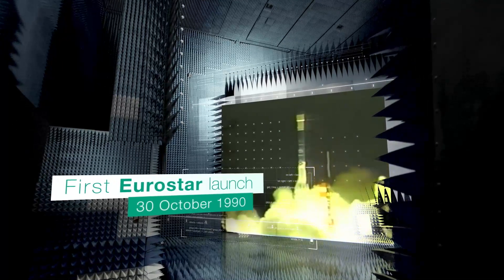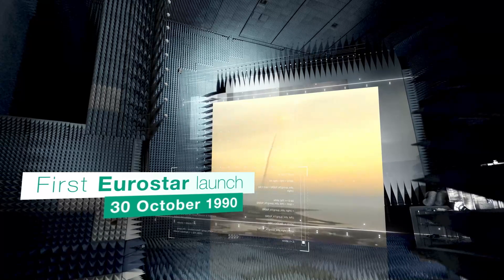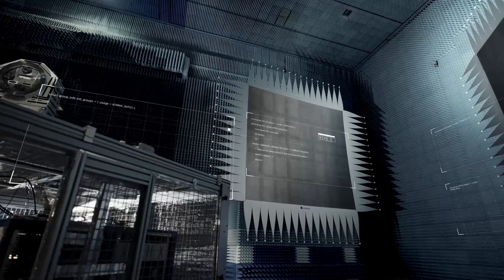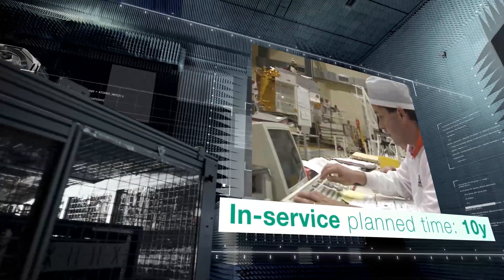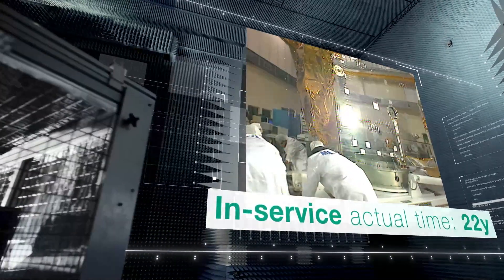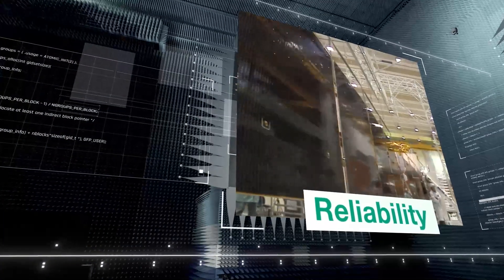Over 30 years ago, the first Eurostar satellite was launched. Inmarsat 2F1 was designed to operate for 10 years and eventually took its retirement 22 years later. Since the very beginning of the family, reliability has been at the heart of the Eurostar product line.